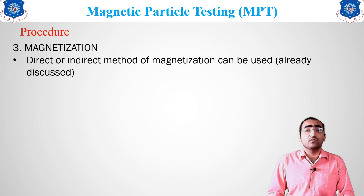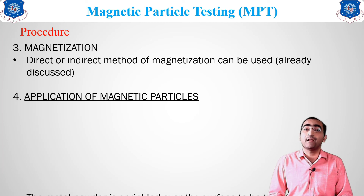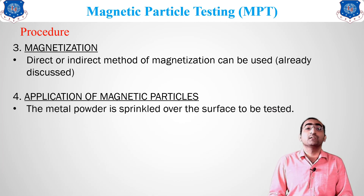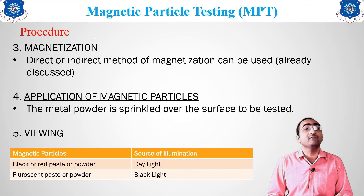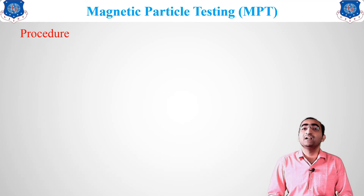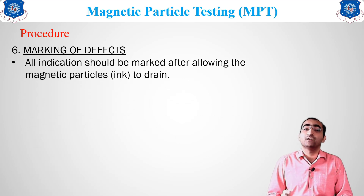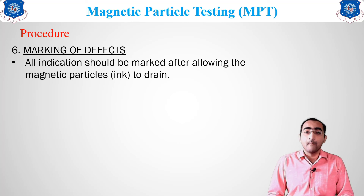After demagnetization, the magnetization of the material is done using direct or indirect methods as discussed. The fourth step is application of magnetic particles — iron powder is sprinkled on the sample to be tested. For black or red color powder, we view under daylight; for fluorescent color powder, we use black light. After sprinkling, we observe the magnetic field lines, and wherever there is a change in the magnetic field lines, we mark it, as it indicates a defect.